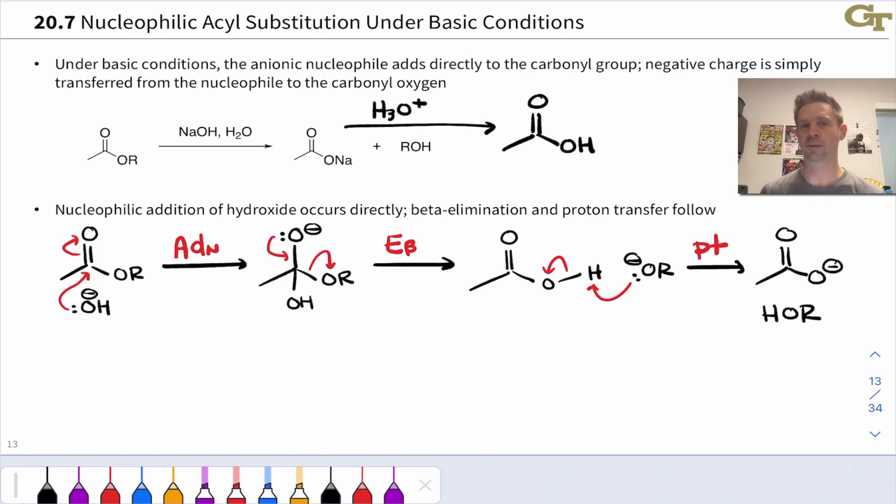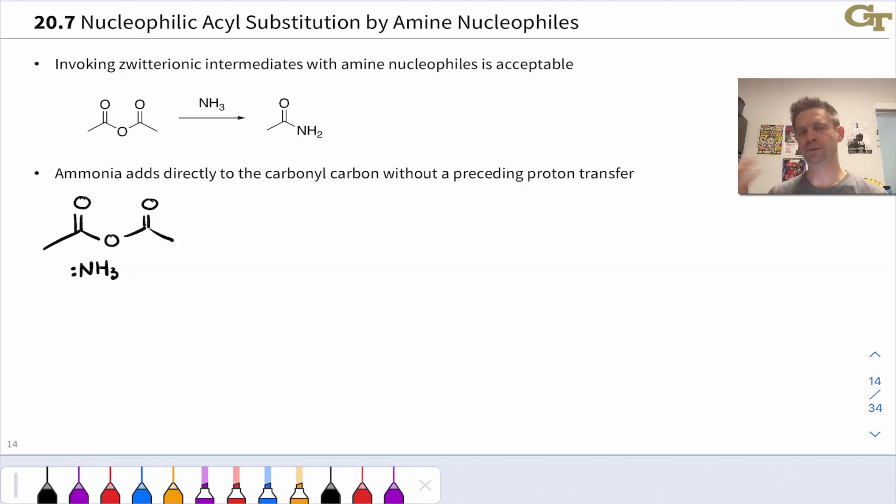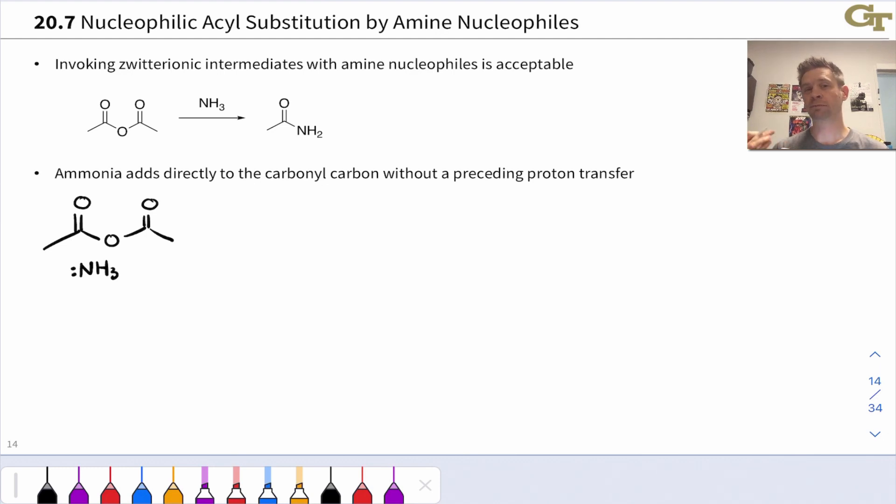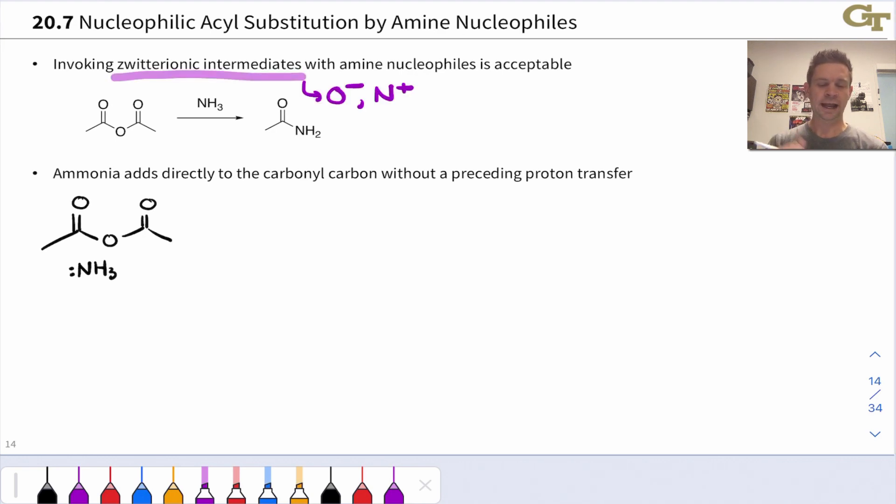Amines are rather unique as nucleophiles in that they can add directly to the carbonyl carbon without the need for an acid or even a base catalyst. Acids are problematic because they'll protonate the amino nitrogen and shut down this nucleophilic reactivity, and so if an acid is used in one of these reactions, it's necessarily very weak, something like acetic acid. And as we did in imine formation, we're going to invoke a zwitterionic intermediate in these reactions involving amine nucleophiles with carboxylic acid derivatives. And in the zwitterion, we're going to have O minus derived from the carbonyl oxygen and N plus derived from the amino nucleophile.